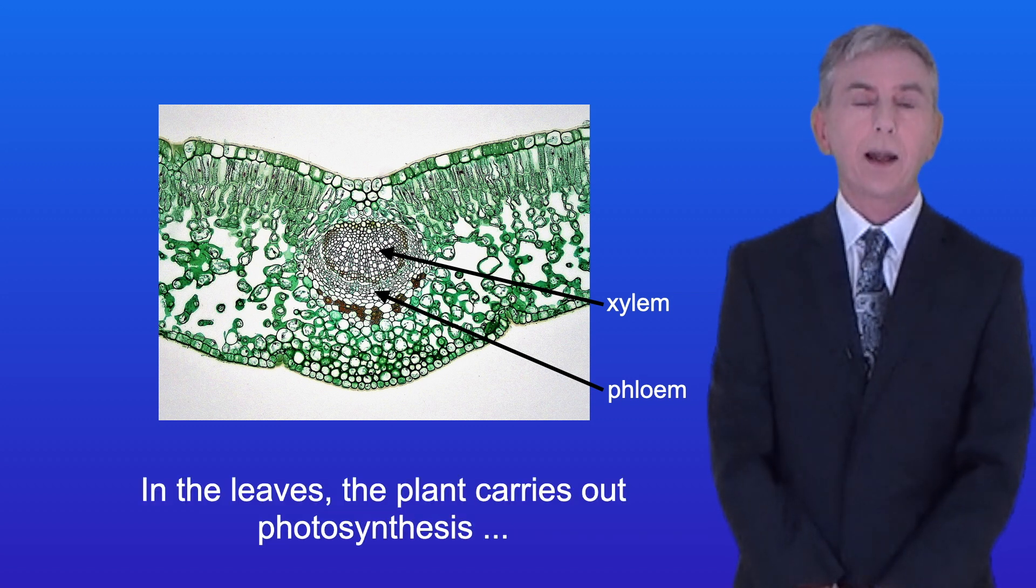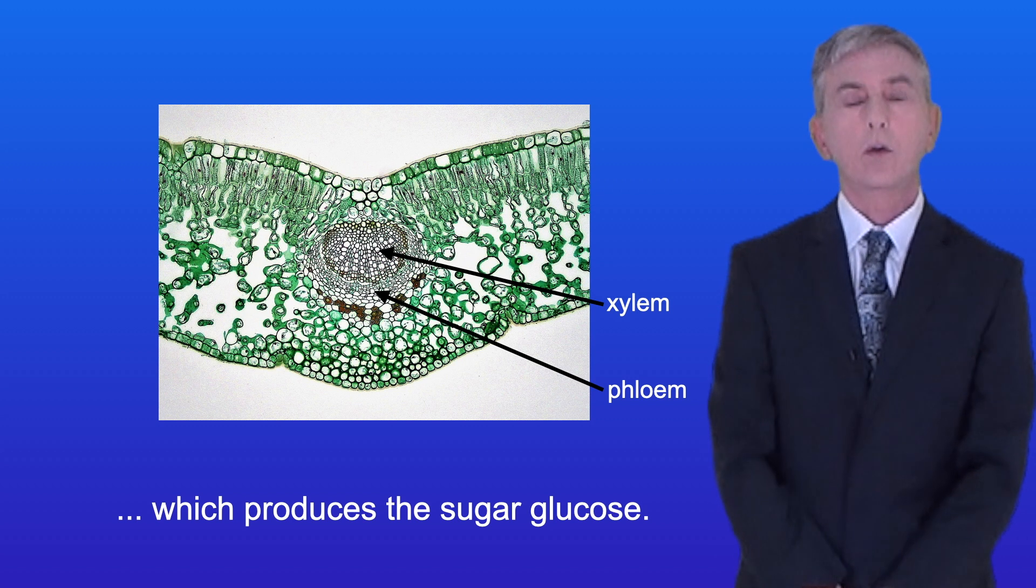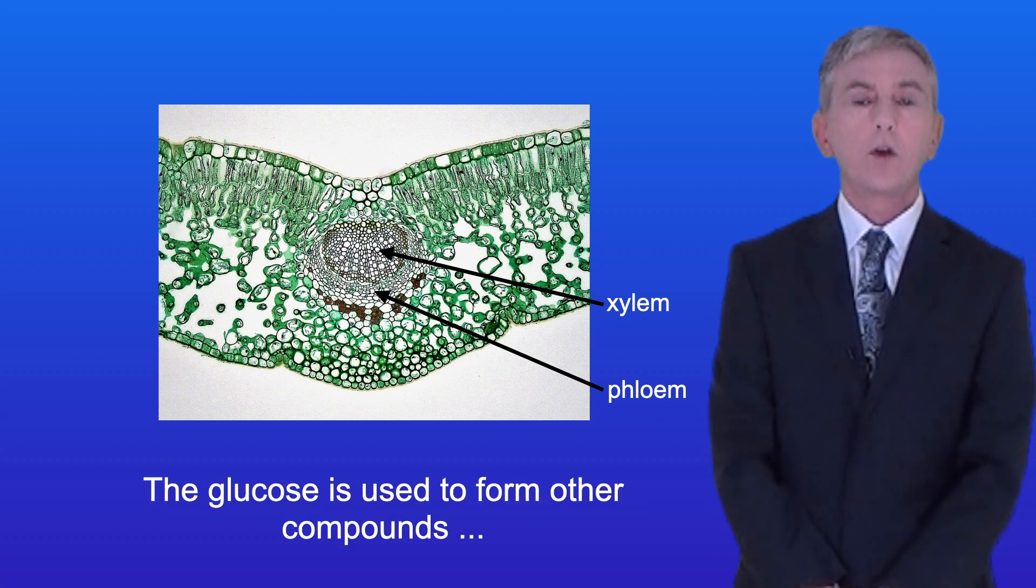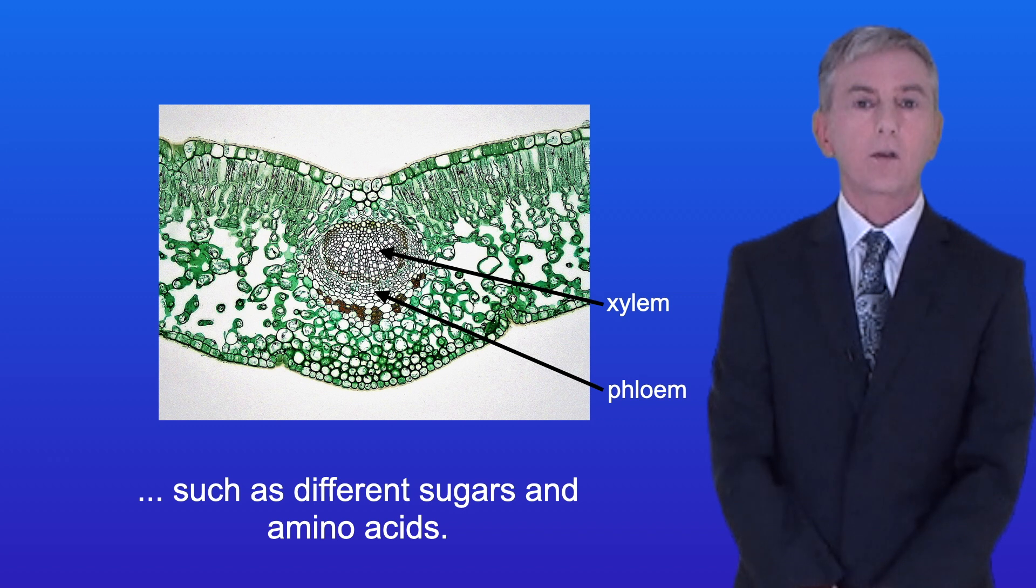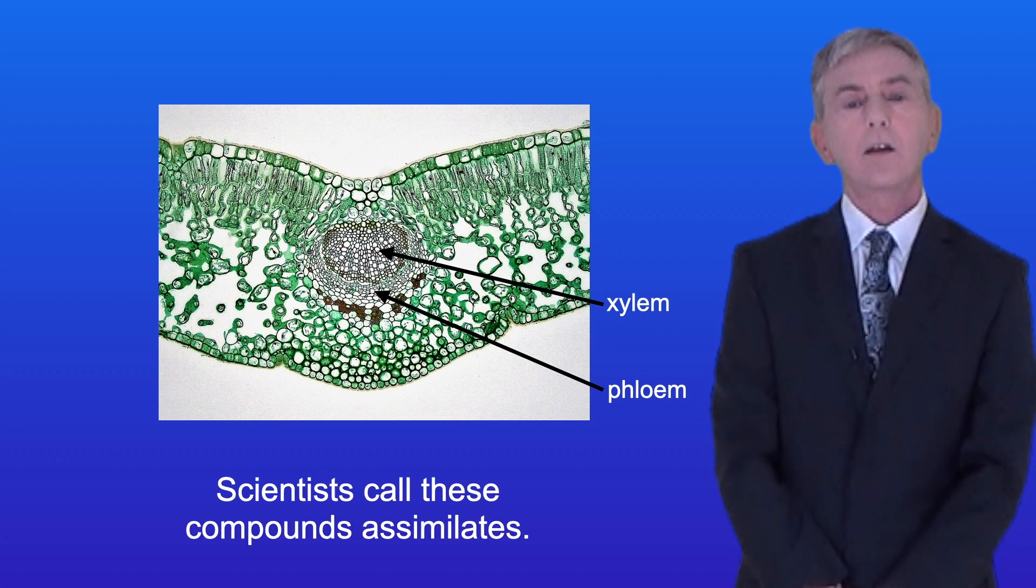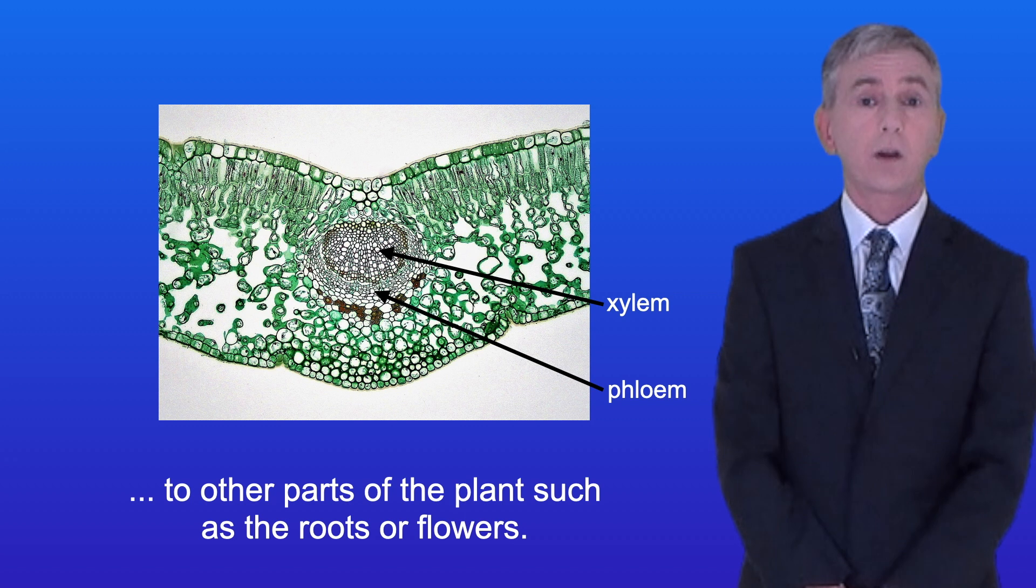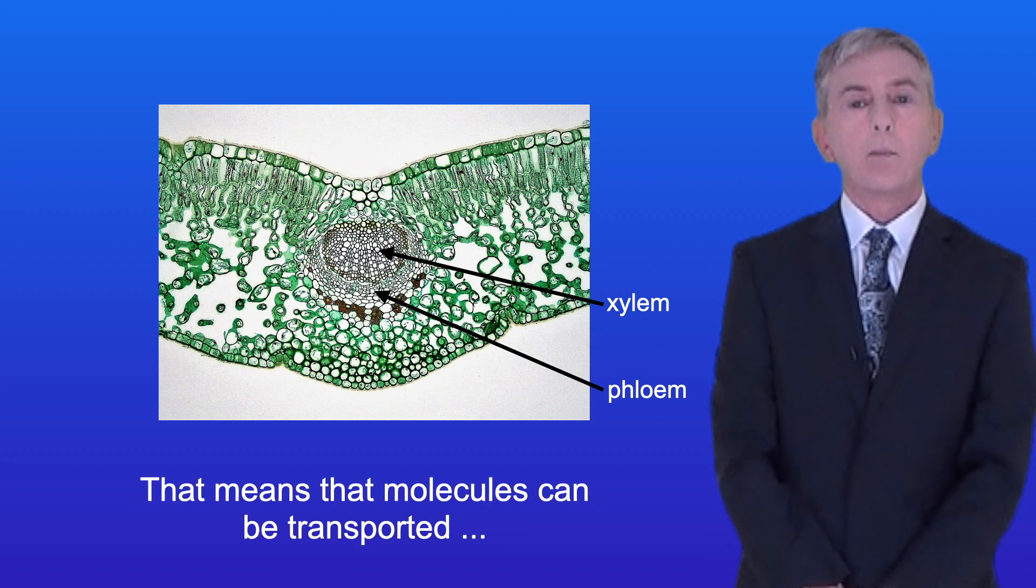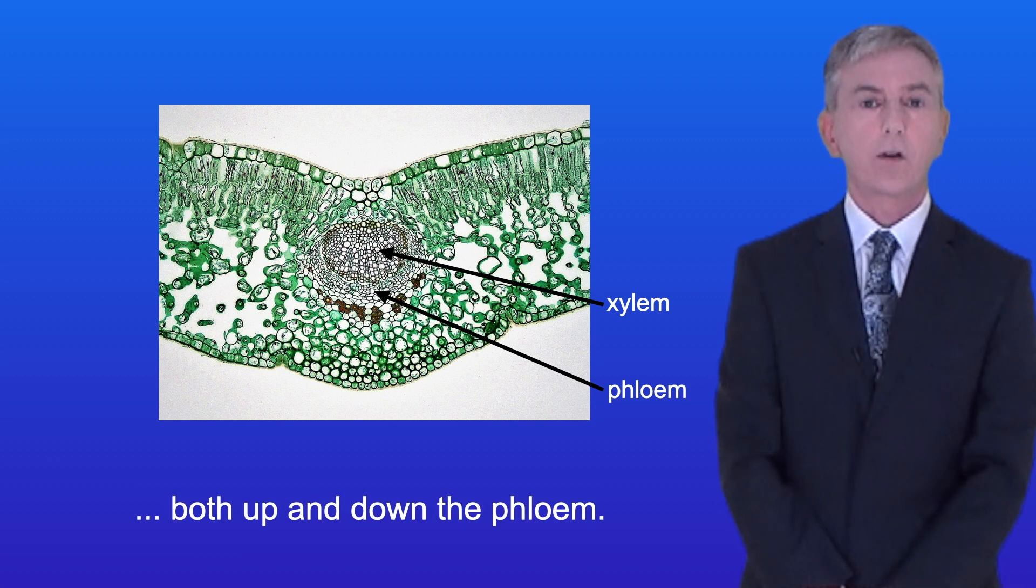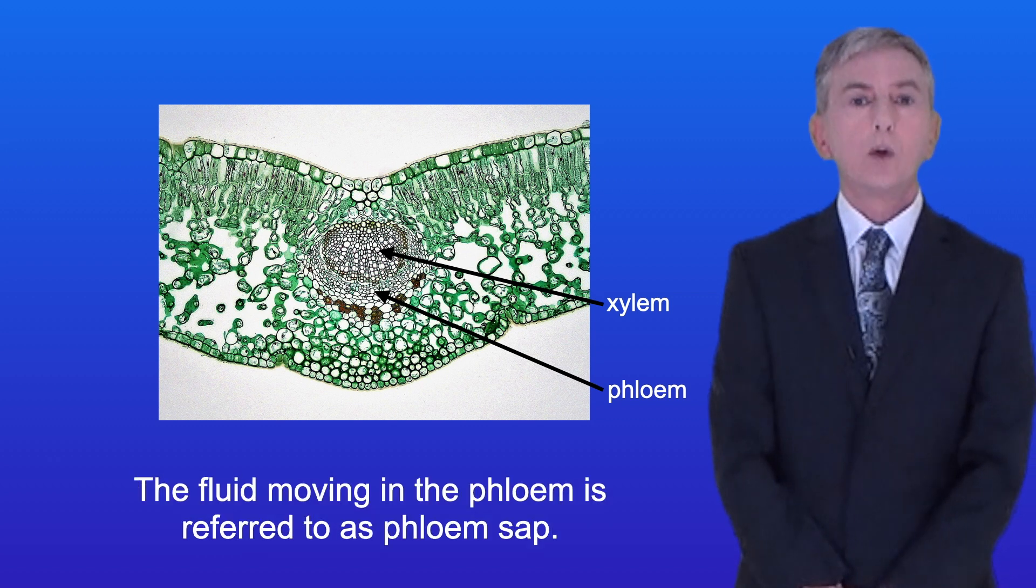In the leaves the plant carries out photosynthesis which produces the sugar glucose. The glucose is used to form other compounds such as different sugars and amino acids and scientists call these compounds assimilates. The job of the phloem is to transport the assimilates from the leaves to other parts of the plant such as the roots or flowers. That means that molecules can be transported both up and down the phloem. The fluid moving in the phloem is referred to as phloem sap.